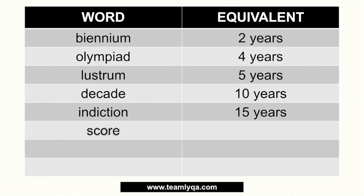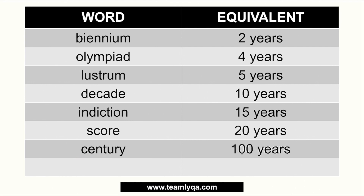The score — if you remember Lincoln's speech, "four score and seven years ago" — the score is actually 20 years. So when you say four score, it means four times 20, which is 80. Next is a century. Century is easy to remember because of "cent," and cent means 100. So the century is 100 years. And then we have the millennium, which is 1,000 years.